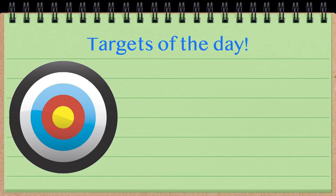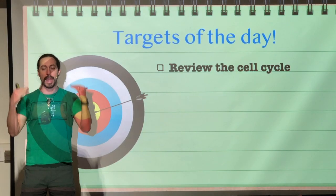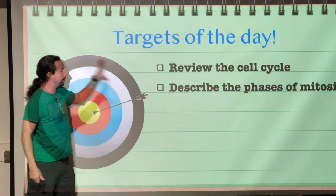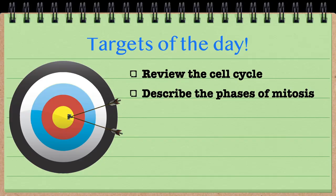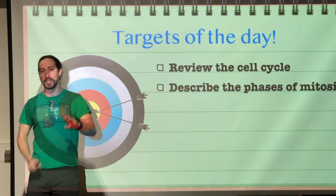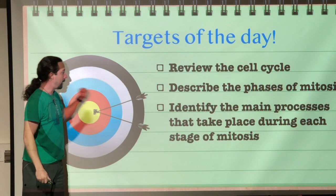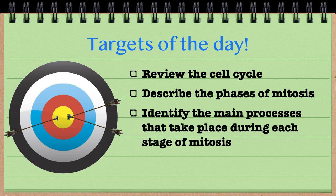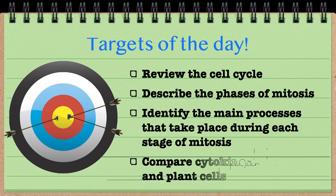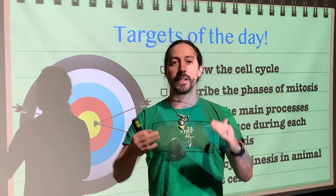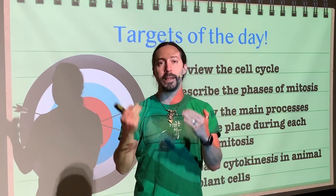Learning targets for the day. First, we will review the cell cycle to get us in the right mode of what happened through those different processes in interphase. Next, we are going to describe the phases of mitosis — for our purposes, four different phases: prophase, metaphase, anaphase, and telophase. Then we will identify the main process that takes place during each stage, and lastly compare cytokinesis in animal cells versus plant cells, because that happens a little bit differently between the two.